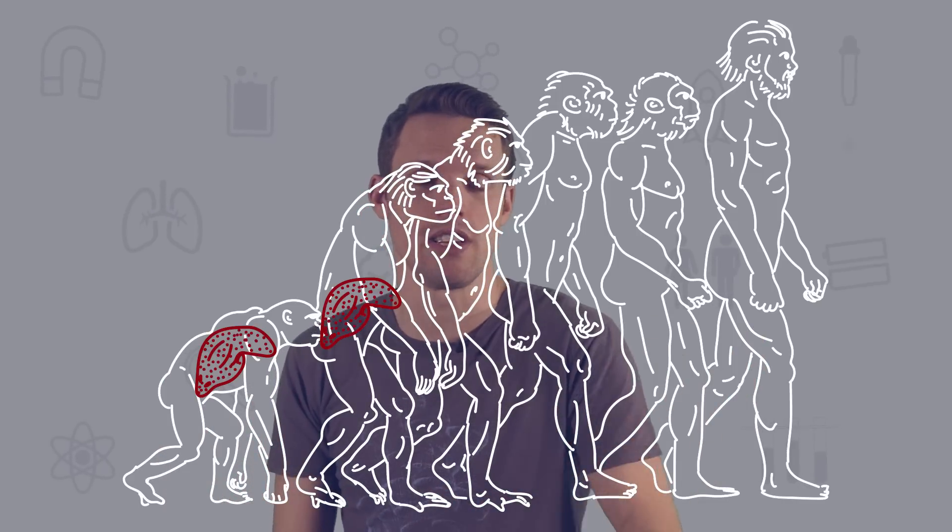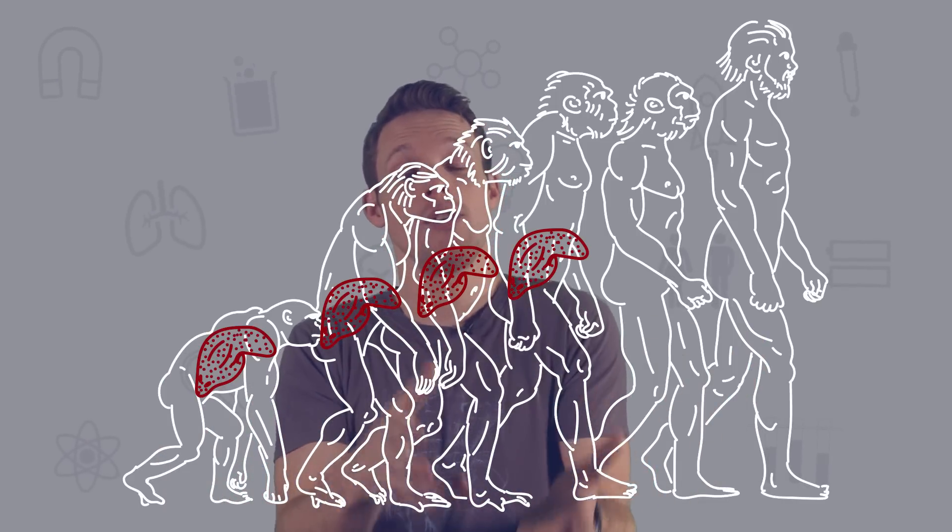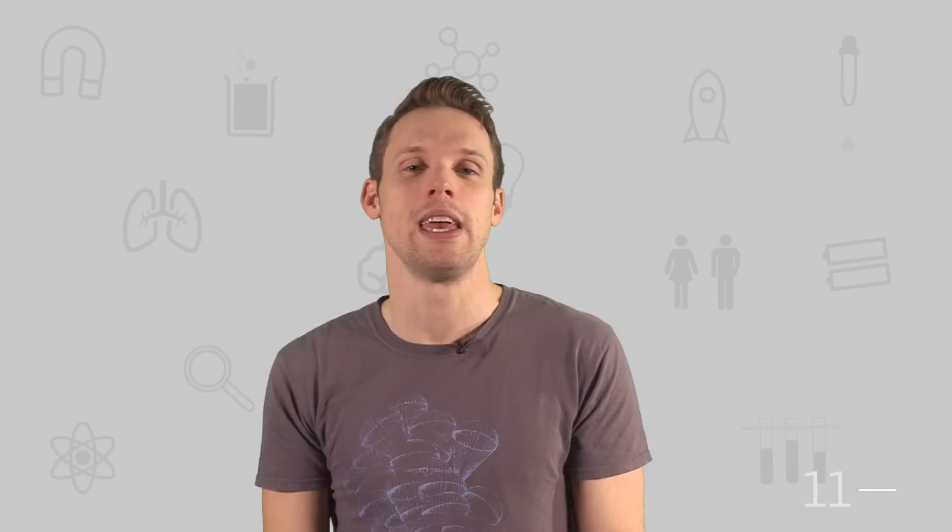Our relationships with these microscopic mates goes back a long time. Our immune system grew up with these guys in evolutionary terms, so it recognizes that they're useful and fairly trustworthy. But it's still primed to stop them when they're in areas where they shouldn't be, or if there are way too many of them.